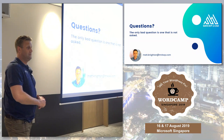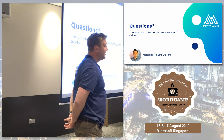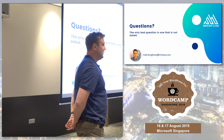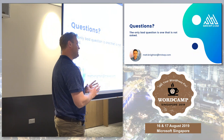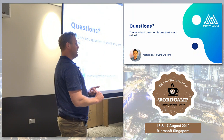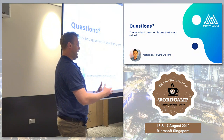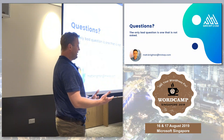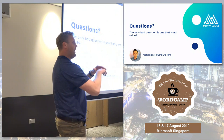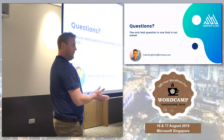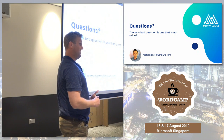Question about image naming: will renaming images help with ranking? Yes — anything you do to improve your content can improve ranking. When it comes to images specifically, don't have something like DSC001.jpg. It's better to have 'matt-and-kate-at-the-zoo.jpg' and then an alt tag saying 'Matt and Kate at Singapore Zoo.' Use hyphenated names for your image files and describe them as best you can.